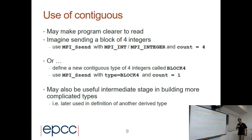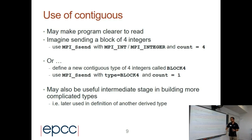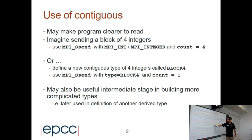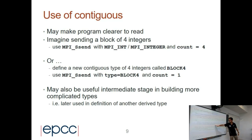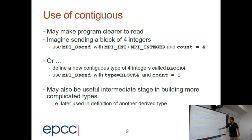One advantage of using derived data types is that the program is more readable for other people. Instead of writing MPI int with count 4, you can define a type called block4. That makes it clearer when another person reads your code. And obviously if we want to define a structure or a more complex data type, we can use this as an intermediate step.